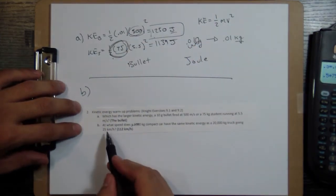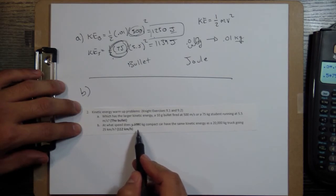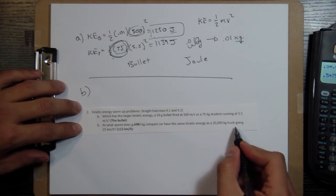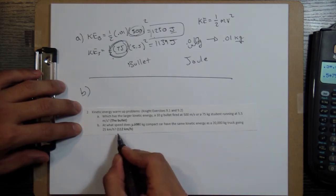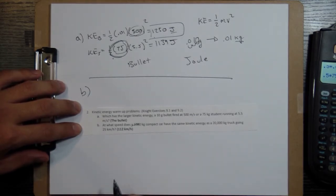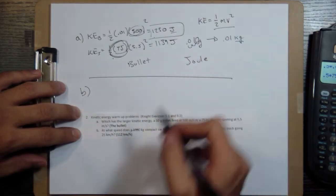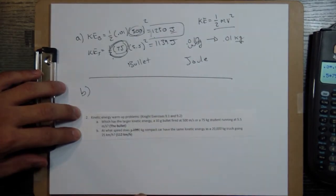For part B, at what speed does a 1,000 kilogram compact car have the same kinetic energy as a 20,000 kilogram truck going 25 kilometers per hour? So we want them to have the same kinetic energy, so we're going to set the 0.5 mv squared for both of them equal to each other.